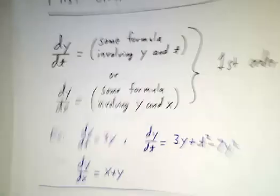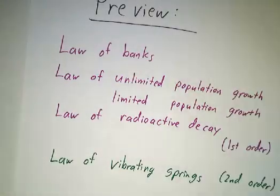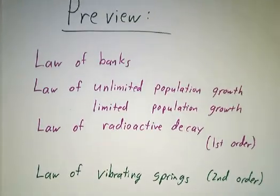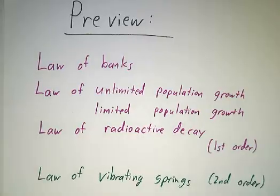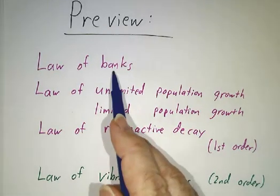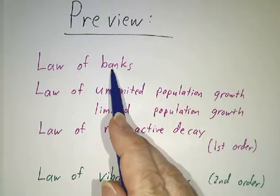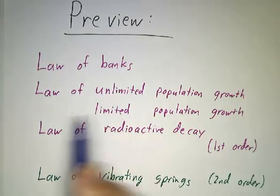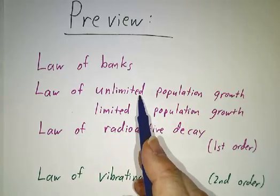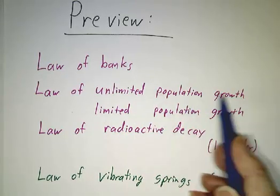So let me give you a preview of what we're going to cover in the next couple of videos. We're going to study how do banks work, and we're going to derive a law of banks, and that's going to give us a differential equation for how much money you have in the bank. We're going to look at unlimited population growth and get a model for unlimited population growth.